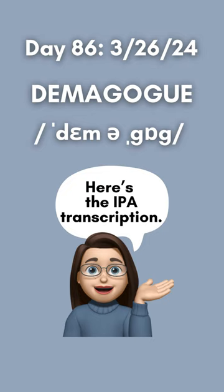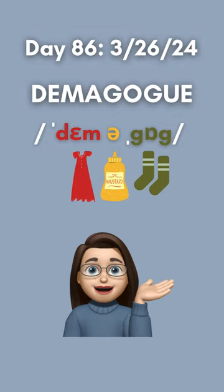Using color vowels to assist with pronunciation, demagogue has the eh as in red dress sound, followed by uh as in a cup of mustard, and ah as in olive socks.